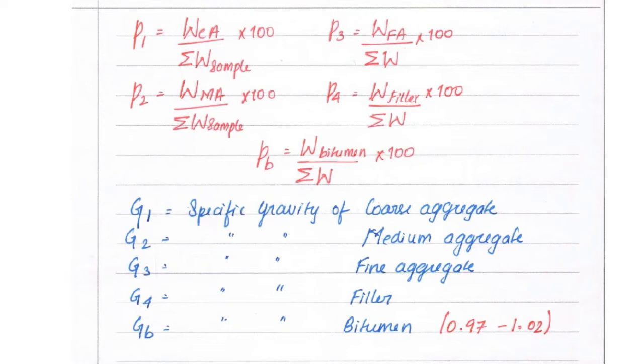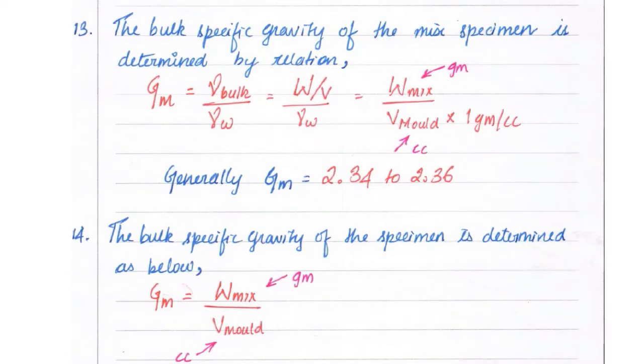The specific gravity of bitumen is taken as 0.97 to 1.02. The bulk specific gravity of mixed specimen is determined by relation Gm = γbulk/γw, that is γbulk = (weight/volume)/γw. γw is unit weight of water = Wmix/Wmold × 1 kg/cm³, that is unit weight of water equals 1 kg/cm³.